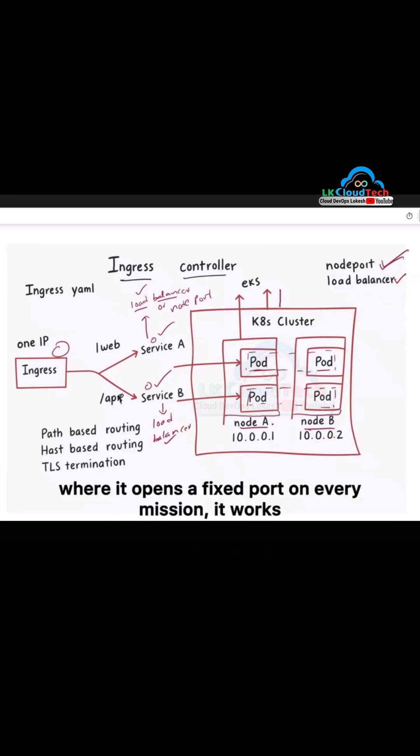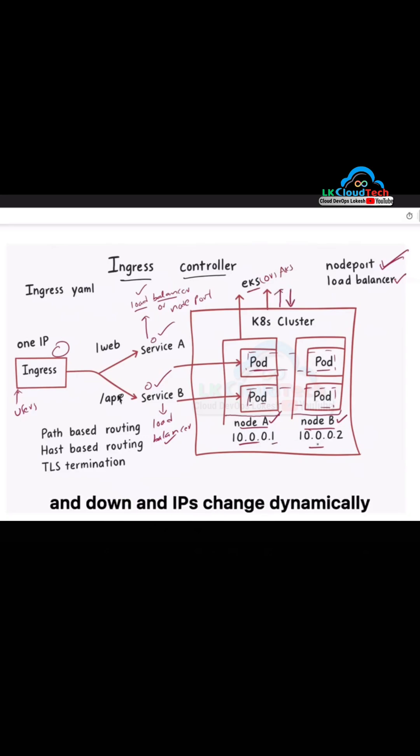If you use service type as node port, where it opens a fixed port on every machine, it works. People outside don't know those machine IPs and it's hard to manage. Cloud services like EKS or AKS manage node groups, which scales up and down and IPs change dynamically.